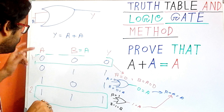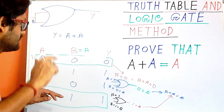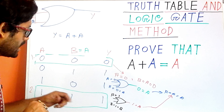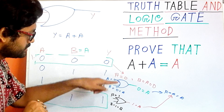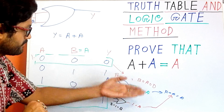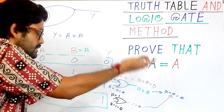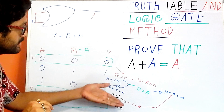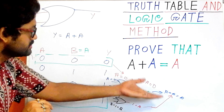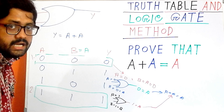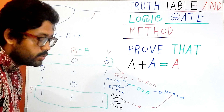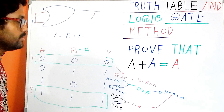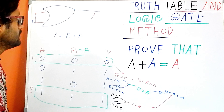For our last condition, A is one and B is also one which equals A. For that combination the output is also one. Since A is one and B is one which equals A, and the output is also equal to A, I can write A plus A equals A. According to conditions one and two, I have shown this separately, and for this combination the output is also A.